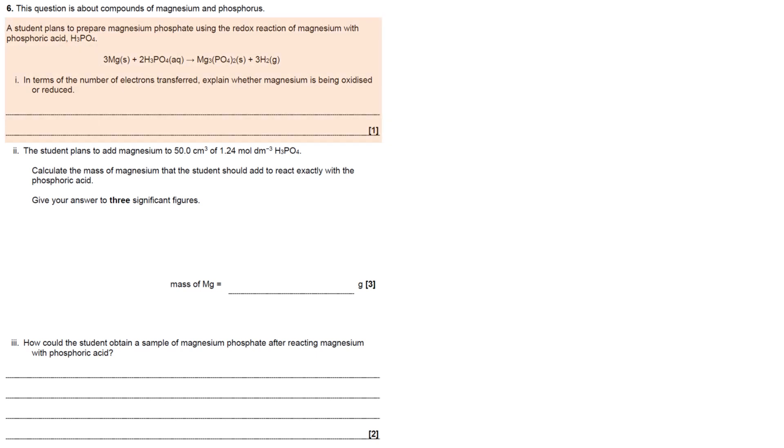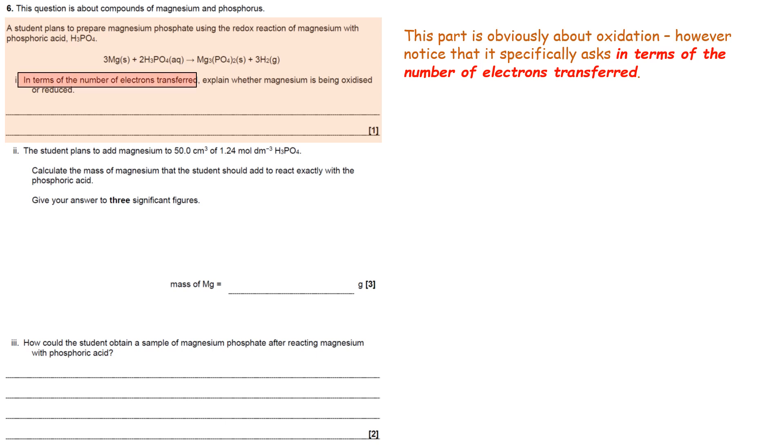So this first bit, obviously, is about redox. You can see it says, in terms of the number of electrons transferred, explain whether the magnesium is being oxidized or reduced. So remember, they specifically say in terms of the number of electrons transferred.